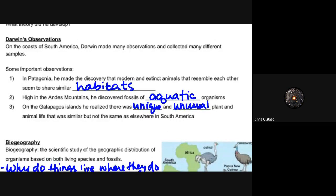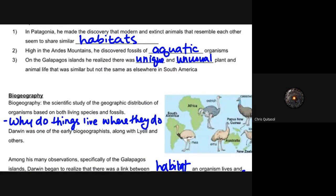I'm going to talk about his observations specifically. The key three components he found during his voyages through South America: first, in Patagonia, he found many modern and extinct animals that resembled each other and shared similar habitats — a key point showing relations between those species. Second, in the Andes Mountains, he discovered fossils of aquatic organisms high up in the mountains, which he found quite interesting. Lastly, in the Galapagos Islands, he found unique and unusual plant and animal life that was similar but not quite the same as in South America.